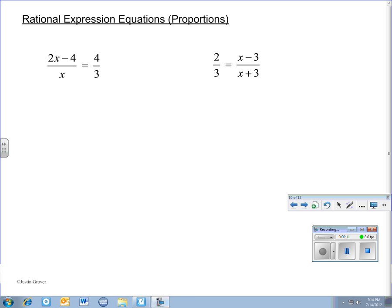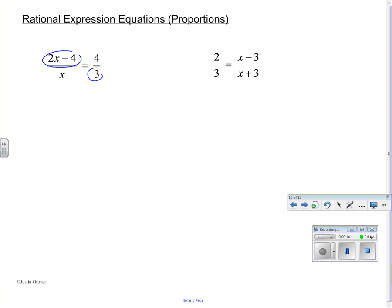And so I multiply the numerator by the denominator of the other fraction. And if polynomials are involved, like 2x minus 4, I have to remember to distribute. And so that gives you 6x minus 12. Cross multiply the other way, 4 and x is 4x. And just solve this basic equation.